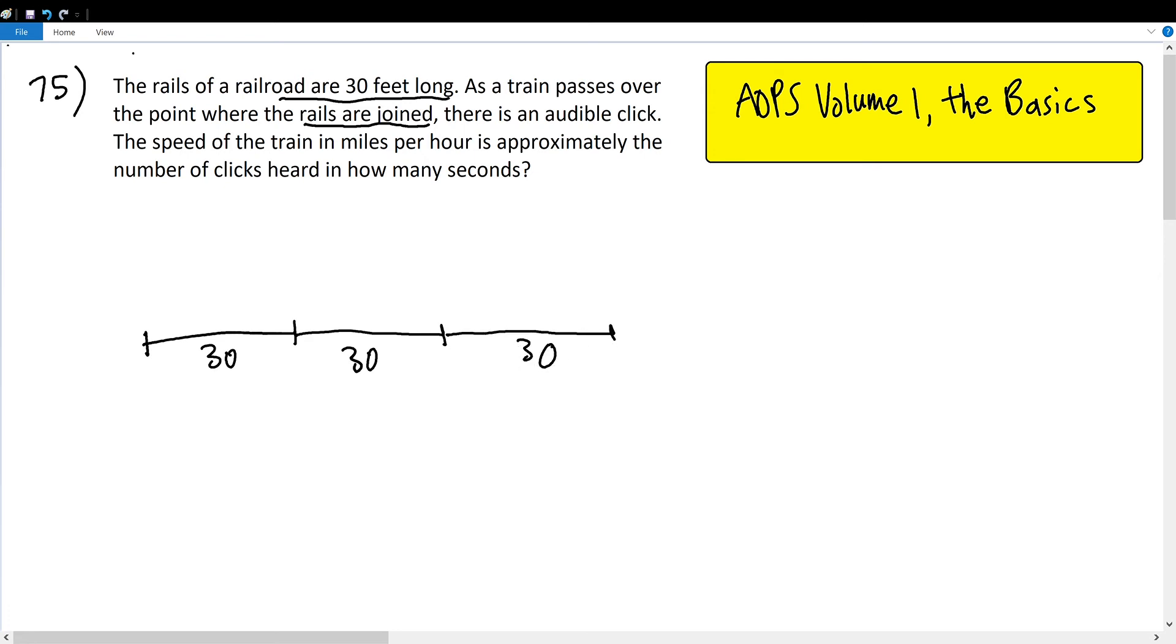So with this in mind, how many clicks are there in one mile? We're told that there are 30 feet for one click. So how many feet are there in one mile? Because we need to find it in the terms for which we're calculating the velocity of the train. We're told that the velocity of the train is measured in miles per hour, so we must convert 30 feet to correlate with miles and hours.